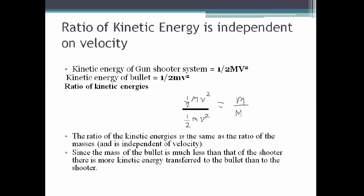Now we find a very interesting relation: the ratio of kinetic energies is independent of velocity. Although kinetic energy depends on velocity, the ratio of kinetic energies is not. The kinetic energy of the gun-shooter system is ½MV², and the kinetic energy of the bullet is ½mv². When you find the ratio of the two kinetic energies and substitute the expression for the bullet's velocity, you find that the ratio equals the mass of the bullet divided by the mass of the gun. So the ratio of kinetic energies is independent of velocity but dependent on the ratio of masses.